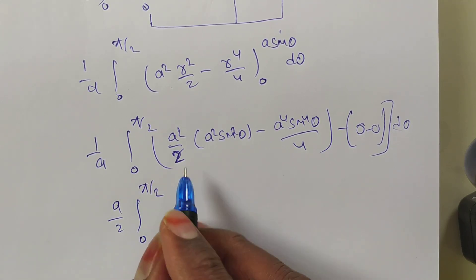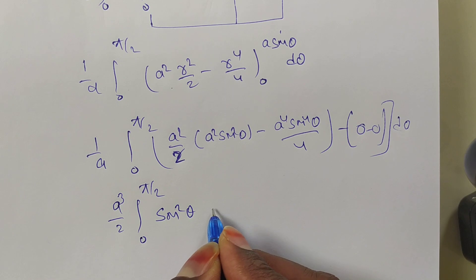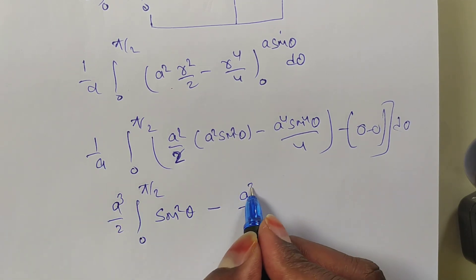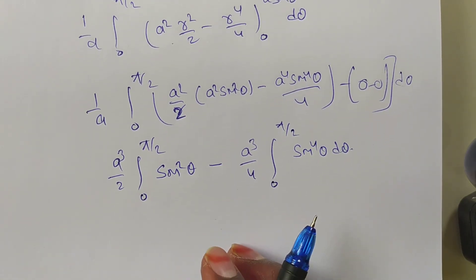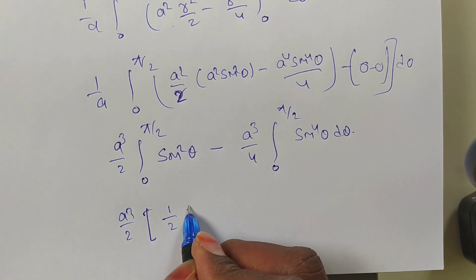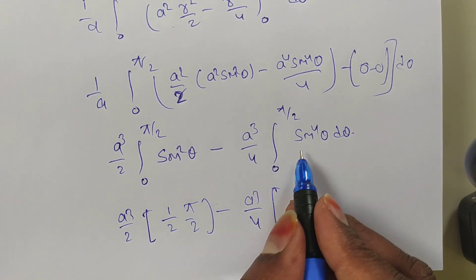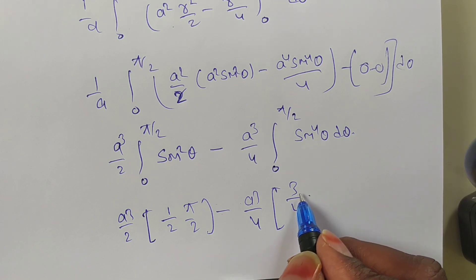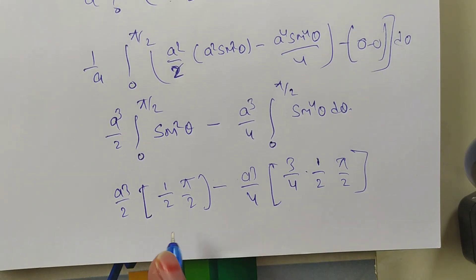Taking a² outside from the 1/a factor, we get a/2 times the integral. Dividing by a, we simplify: the first term becomes a³·sin²θ and the second becomes a³·sin⁴θ/4. By Wallis' theorem, the integral from 0 to π/2 of sin²θ dθ = π/4, giving a cube term with π/2 times 1/2. The integral of sin⁴θ gives 3π/16 using Wallis' theorem.